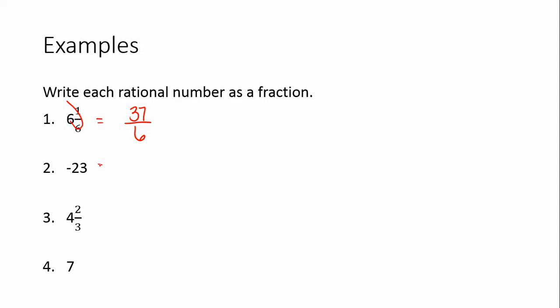Number 2. Again, we're just going to put the integer over 1. If you'd like to pause the video here, try 3 and 4 on your own, and then check with what I get. When you candy cane number 3, 4 times 3 is 12, plus 2, you get 14 thirds. And number 4, we have a whole number, we just write it over 1.